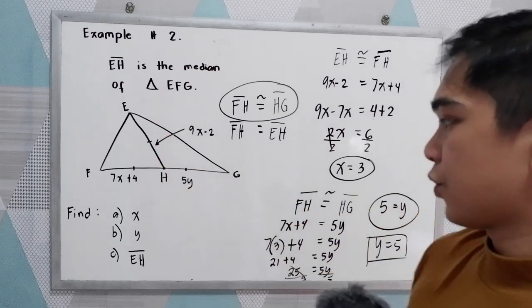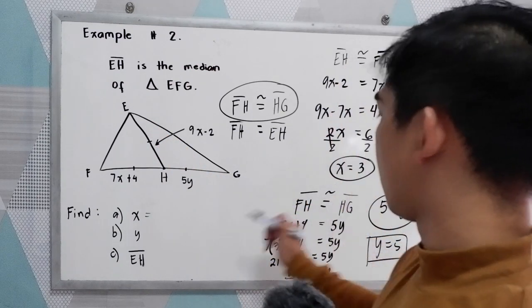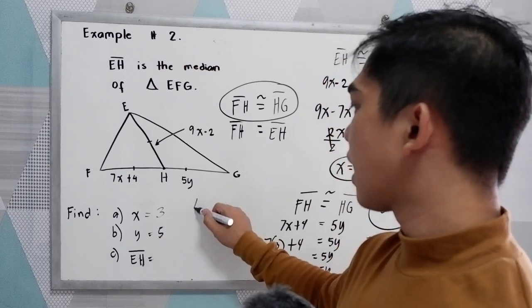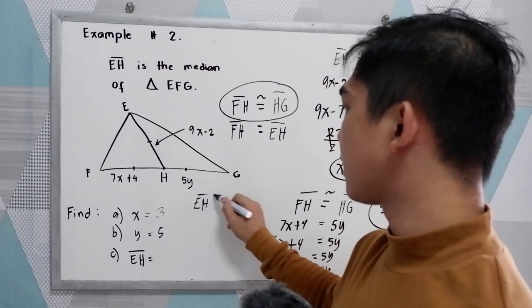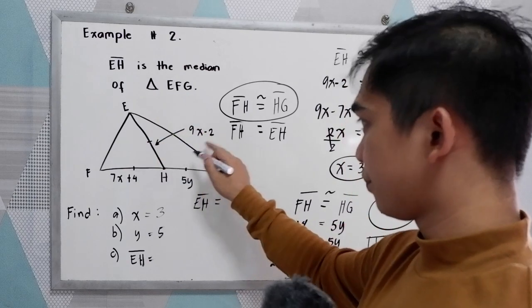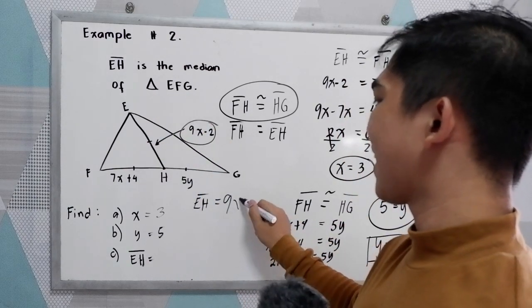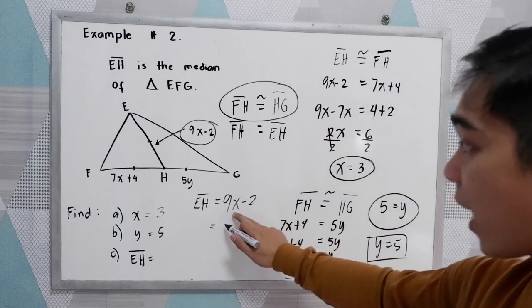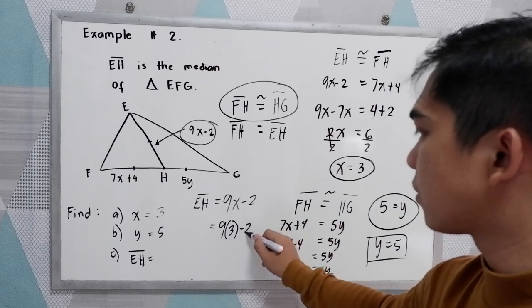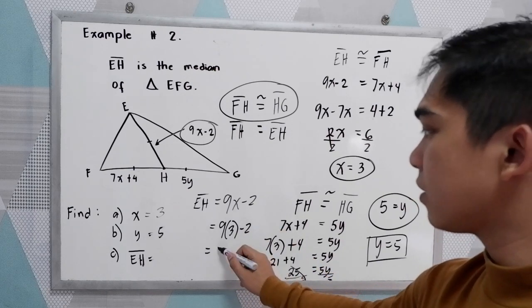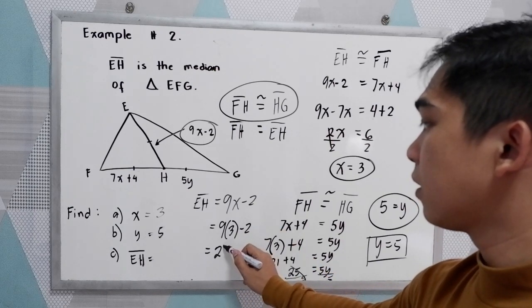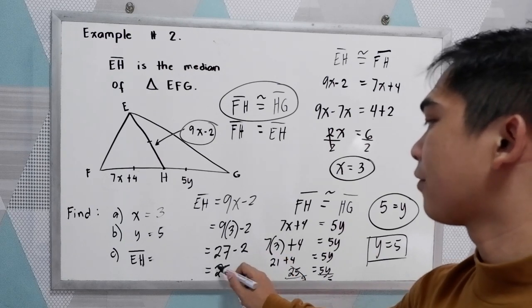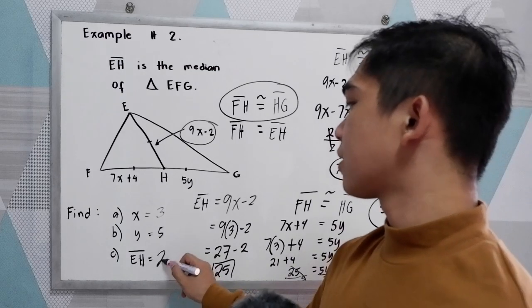Now we need to get the value of EH. Segment EH is equal to the given 9x minus 2. Now simply substitute the value of X. So 9 times 3 minus 2. 9 times 3 is 27 minus 2, that is 25. So EH is 25.